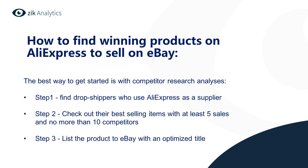How to find winning products on AliExpress to sell on eBay? We have three steps. The best way is to start with competitor research analysis. Step one: find dropshippers who use AliExpress as a supplier. Step two: check out their best-selling items with at least five sales and no more than 10 competitors. Step three: list the product on eBay with an optimized title.